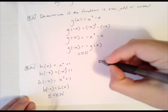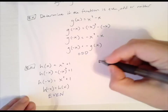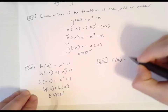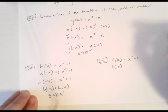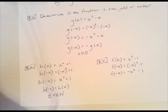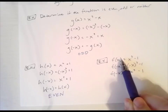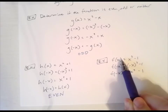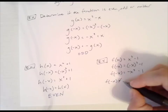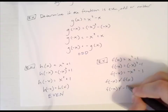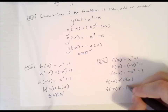Last example: f(x) = x³ - 1. Substitute -x: f(-x) = (-x)³ - 1 = -x³ - 1. This is not the same as the original (x³ - 1), and it's not the complete opposite either — the -1 didn't change sign. So f(-x) ≠ f(x) and f(-x) ≠ -f(x). Therefore, this function is neither even nor odd. That's all — see you in class tomorrow.